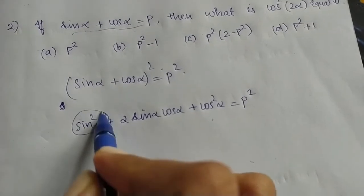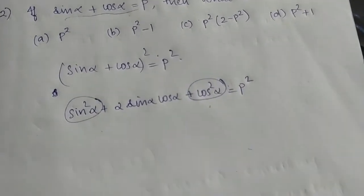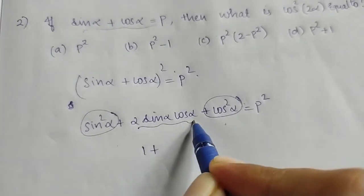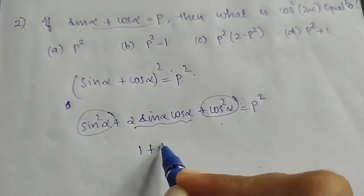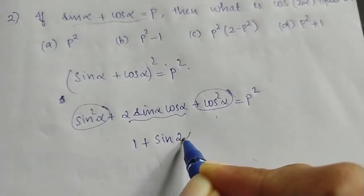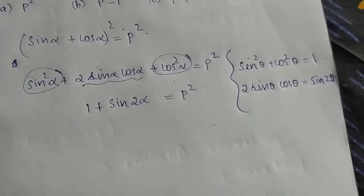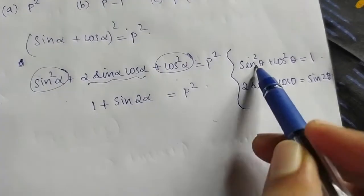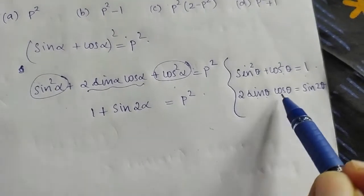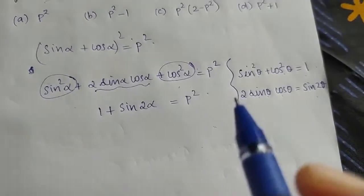We know sin² alpha plus cos² alpha equals 1. So 1 plus 2 sin alpha cos alpha equals p². And 2 sin alpha cos alpha is sin 2 alpha. We need to know these two standard formulas: sin² theta plus cos² theta equals 1, and 2 sin theta cos theta equals sin 2 theta.